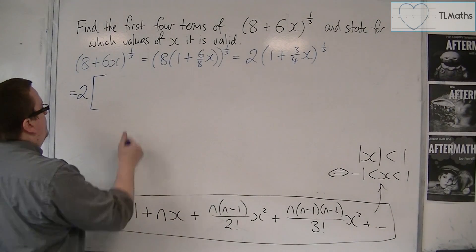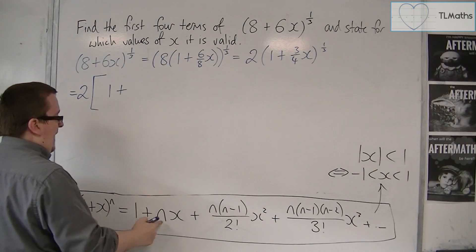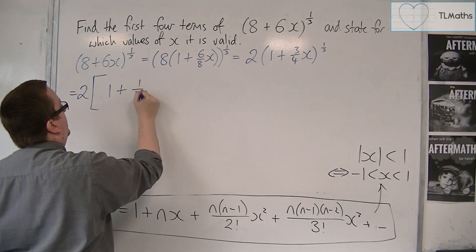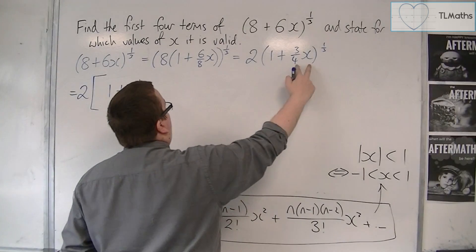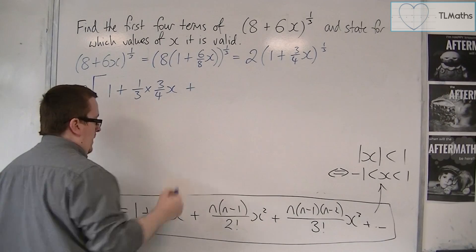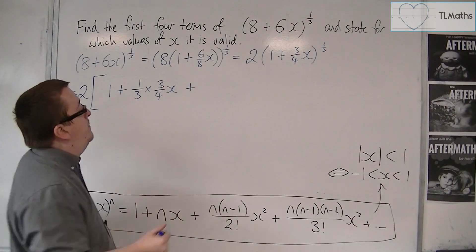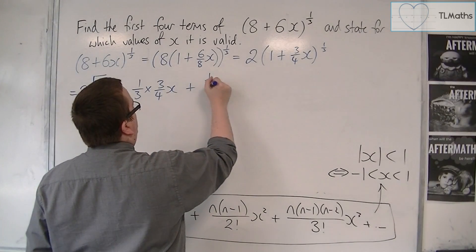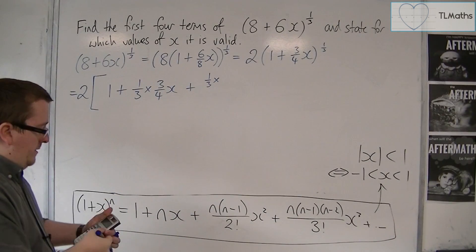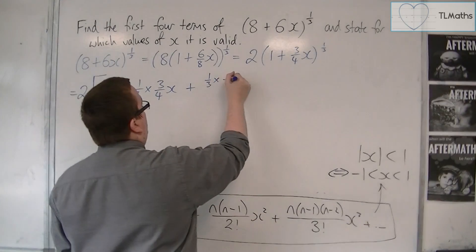I can take that 2 outside of a big bracket and then expand (1 + 3/4 x)^(1/3). So we've got 1 + n times x, where n is 1/3 times by x, which is 3/4 x, plus n times (n - 1), so 1/3 times (n - 1), which is 1/3 take away 1, which is -2/3.